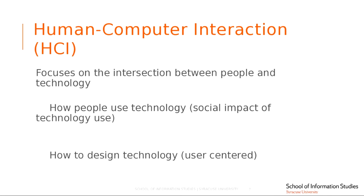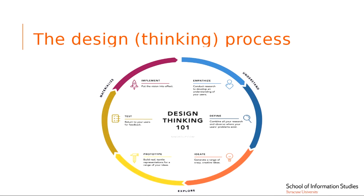Another group thinks about how we actually design technology. People are different and have different needs, so we often think about design from a user-centered perspective — designing for people in various contexts. I'm borrowing a diagram from the Nielsen Norman Group. Jacob Nielsen and Don Norman are high-profile HCI scholars and practitioners. Don Norman is currently running the Design Lab at UC San Diego. They developed this design thinking process.